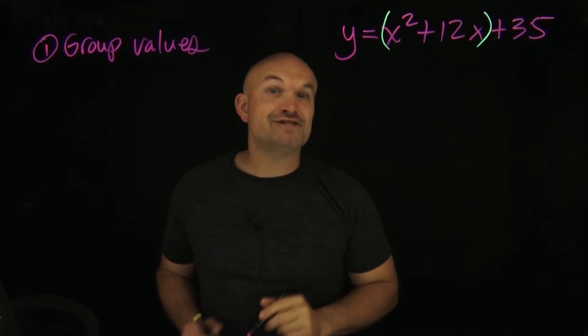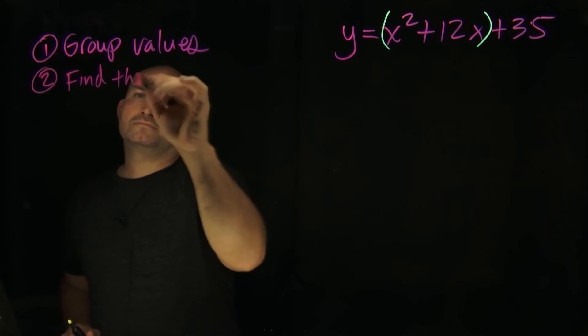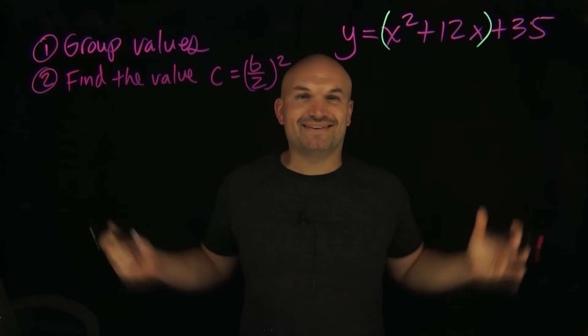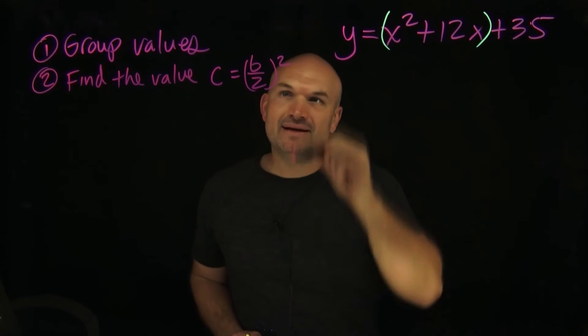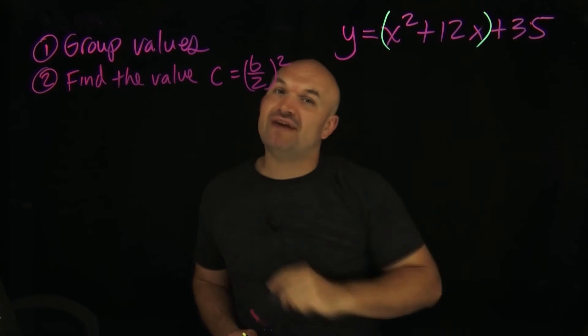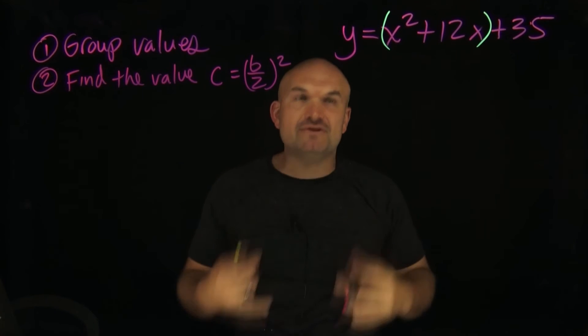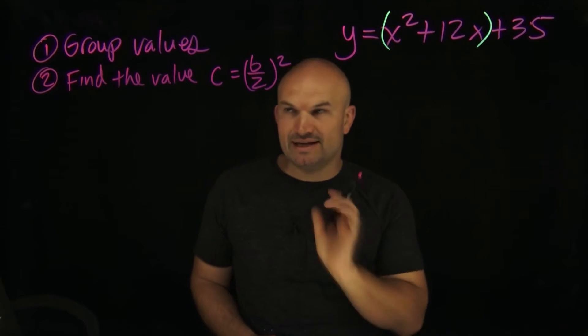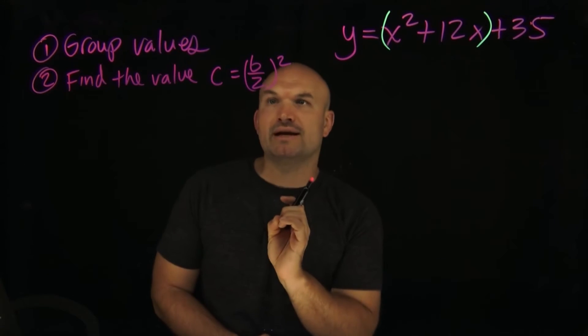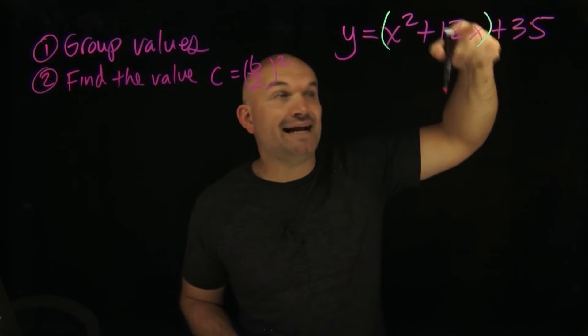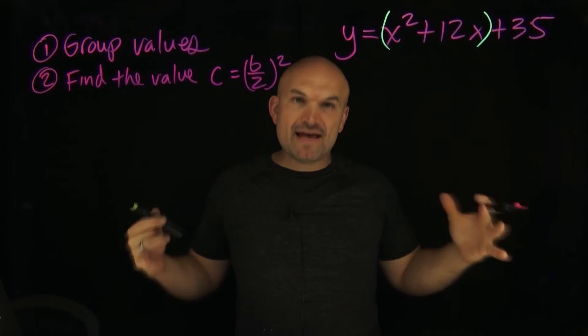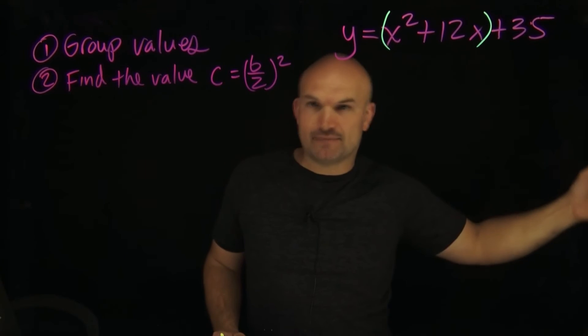Our next step is to find that value. The value of c is like everything about completing the square. It's basically taking your middle term, which is your b, and then dividing it by two and then squaring it. That is going to be the value that is going to complete your square. Now what we're going to want to do, it's really important here, we need to make sure we add it inside the parentheses. That is creating our perfect square trinomial. And then we need to make sure we subtract it outside the parentheses.